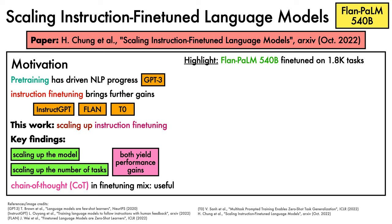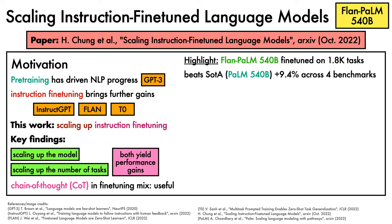One of the highlight results of the work is the fine-tuning of a model referred to as Flan-PaLM with 540 billion parameters on 1,800 tasks, which is found to outperform the existing state-of-the-art, the PaLM 540 billion parameter model, by more than 9% on average across four diverse benchmarks.